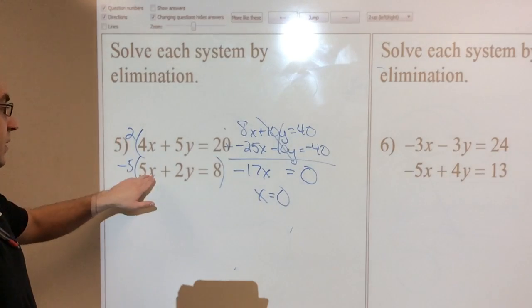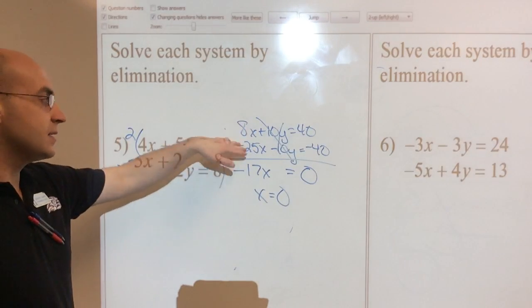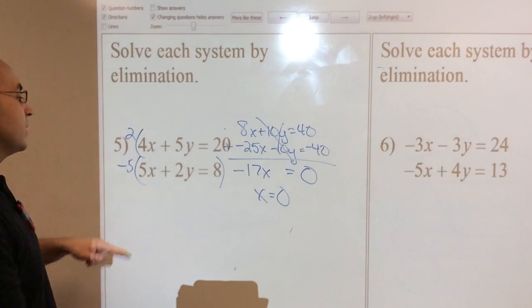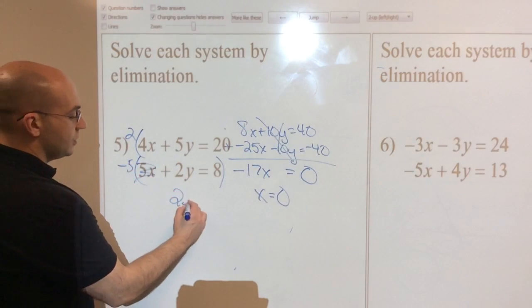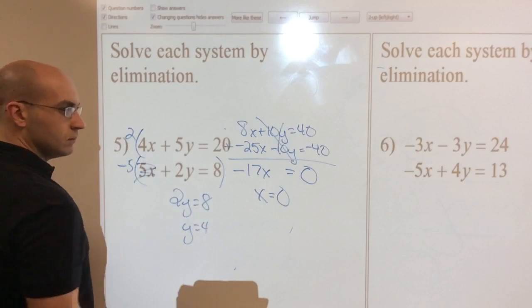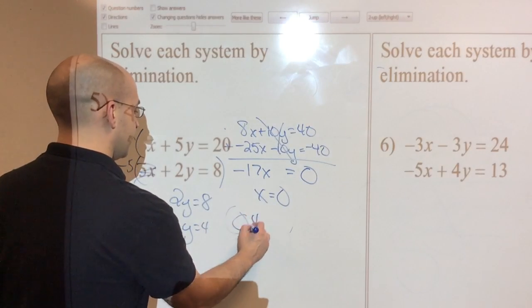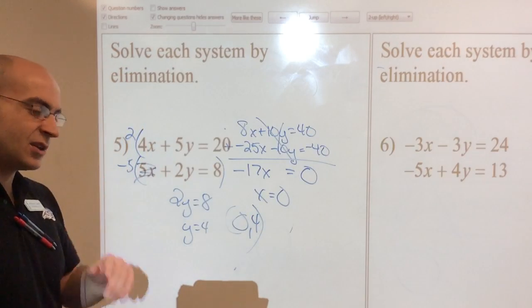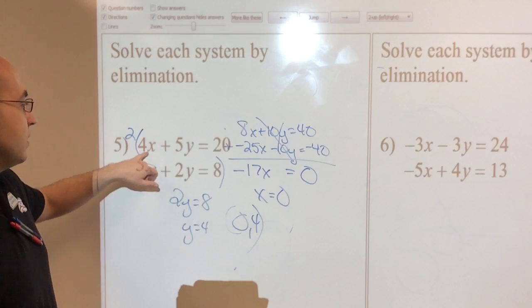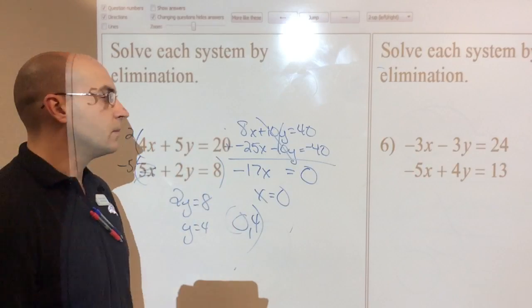So when I plug in 0, I will just take the top equation or the bottom equation, I am sorry. Remember, you can't plug it into something you changed. I am going to plug it into the bottom equation, so this would cancel. And then I would have 2y equals 8. So y is 4. Wow, that was super easy. So my answer is 0, 4. Let's plug it into the top equation just to make sure. x is 0, so that would cancel. 4 times 0 is 0. And 5 times 4 is 20. Done. Cool.